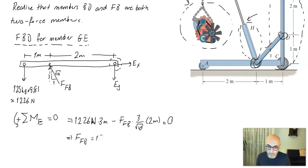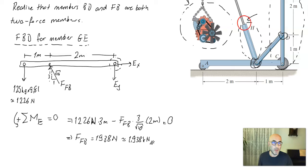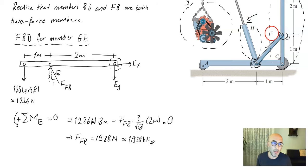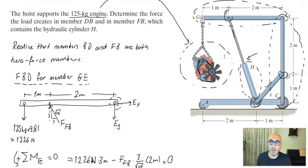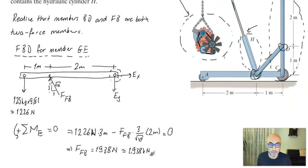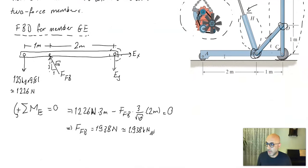Solving this equation gives us FFB equals 1938 N, or 1.938 kN. That is the force acting within member FB, which contains the hydraulic cylinder.